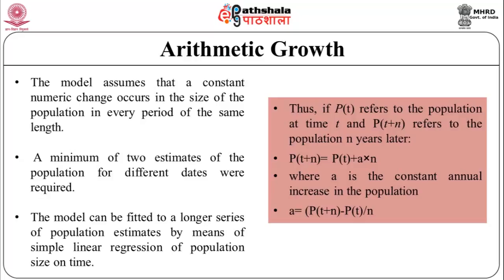A minimum of two estimates of the population for different dates are required to estimate the annual increment and to project the size. The arithmetic model can be fitted to a longer series of estimates by means of simple linear regression of population size on time. If p(t) refers to the population at time t and p(t+n) refers to the population n years later, then p(t+n) = p(t) + a·n, where a is the constant annual increase, that is, a = [p(t+n) − p(t)] / n.